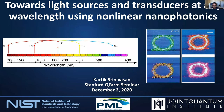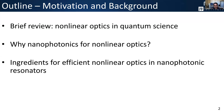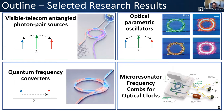We're basically trying to develop nonlinear nanophotonics technology to address some of the different challenges in quantum information science — one of which is the wide variety of different wavelengths that you'd like to have access to. I want to start by motivating what questions we're trying to address and why we think they're interesting. I'll begin by reviewing some of the ways nonlinear optics is already used extensively in quantum science, then discuss why nanophotonic platforms are compelling for developing nonlinear optical devices.